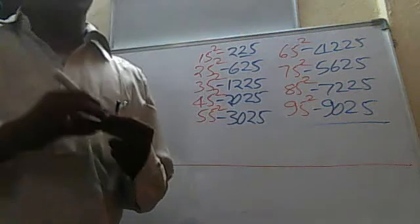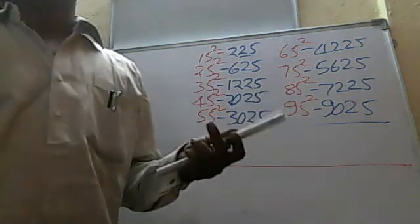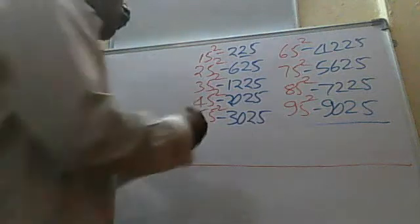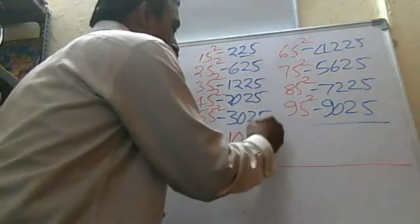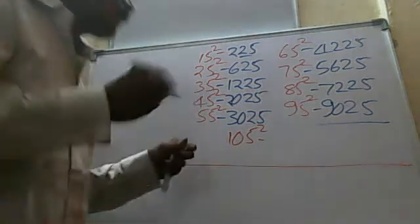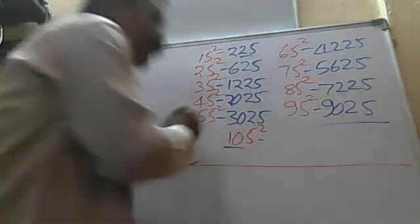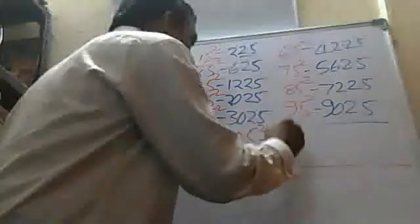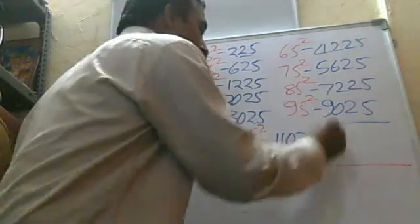This technique is not only for these numbers, it can be applicable for any 2-digit or 3-digit number also. For example, 105². It is a 3-digit number. The last digit is 5, so the 10th part is 10. 10 after 11. 10 into 11 is equal to 110, so 11025. The last 2 digits are always 25.